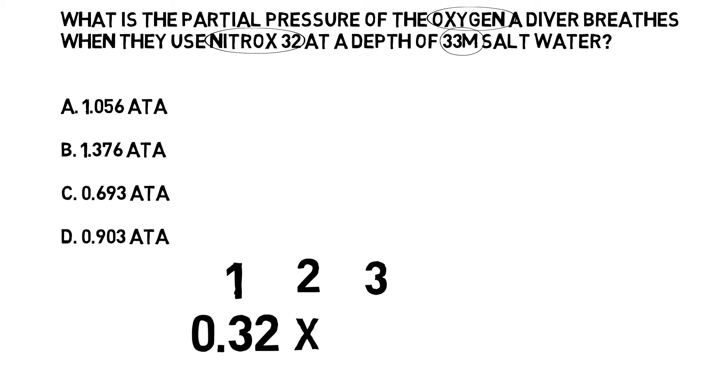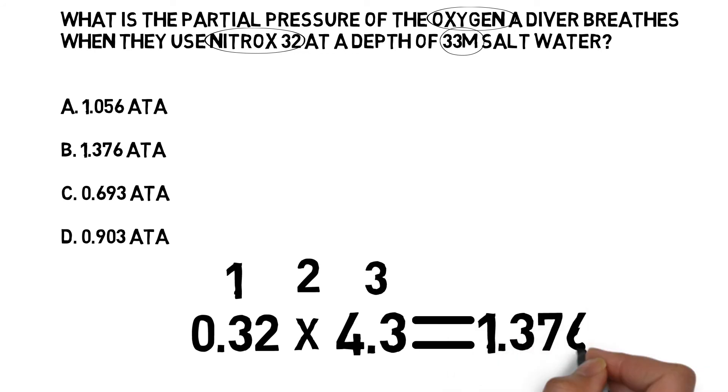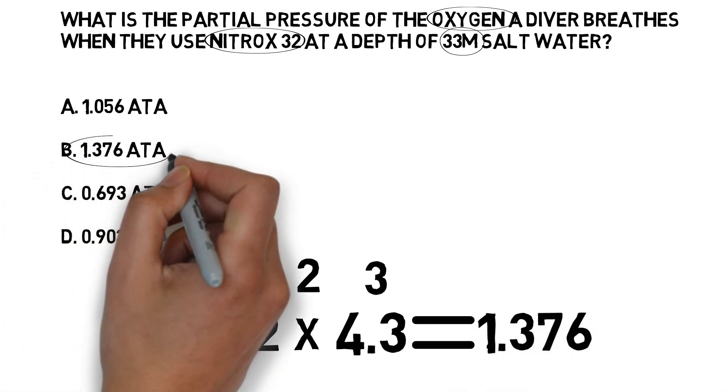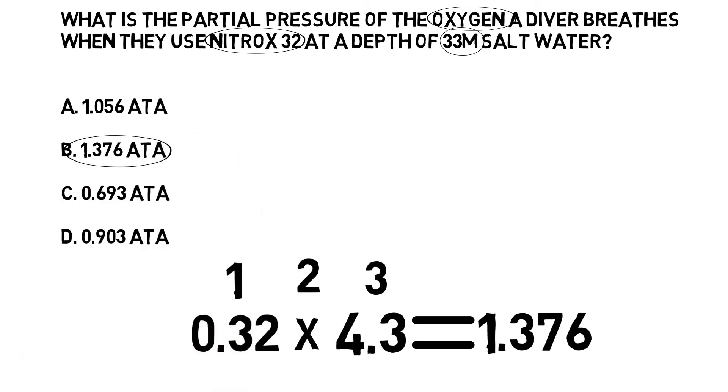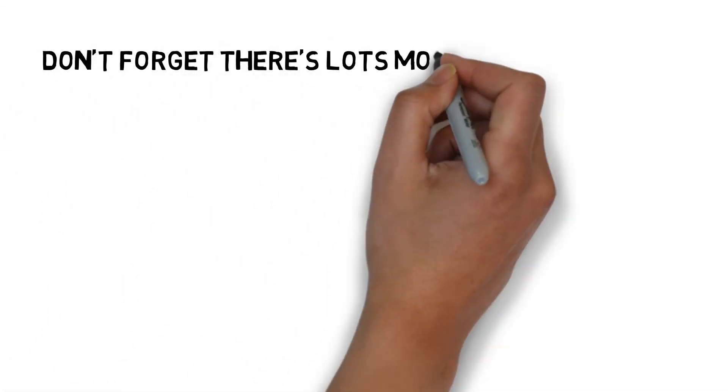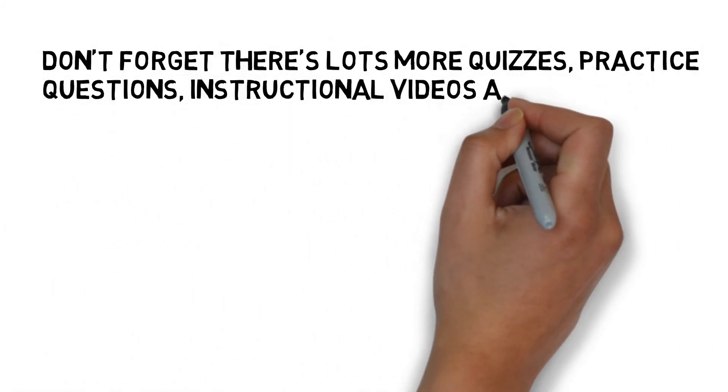That pressure would be 4.3 atmospheres. We now have our calculation: 0.32 multiplied by 4.3 gives us 1.376. That is very close to the maximum depth at which you could breathe nitrox 32. You should never plan a nitrox dive to exceed an oxygen partial pressure of 1.4 atmospheres.